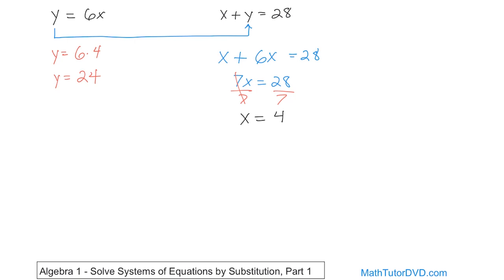So basically, these are really important. They're basically the answer. So what we say is that the point 4 comma 24 is the solution. If we were to graph this equation and this equation, they would cross at one point. That would be 4 comma 24.